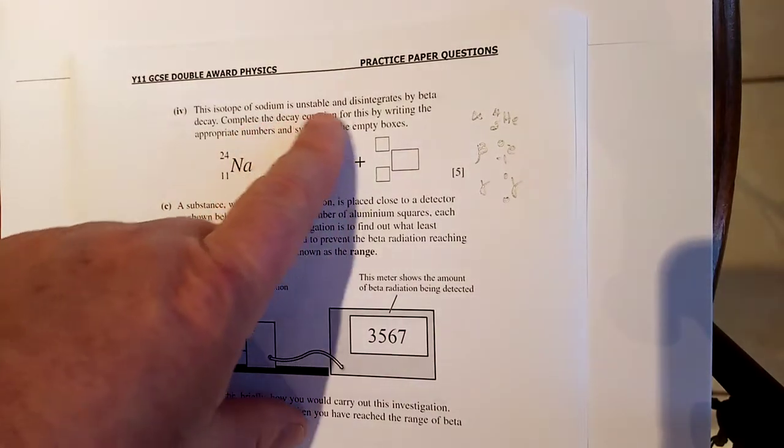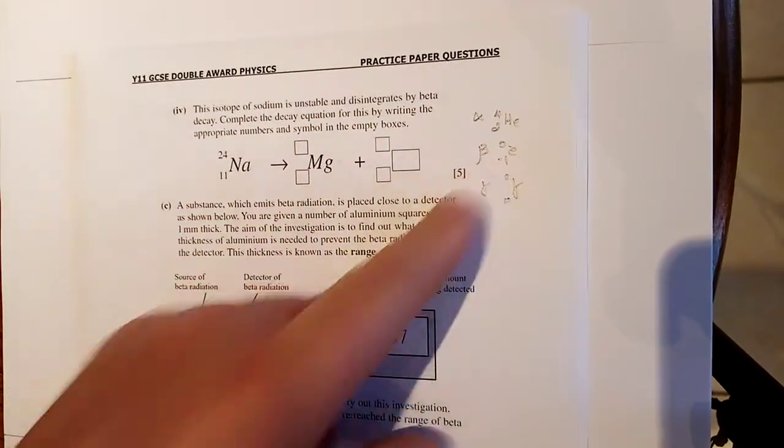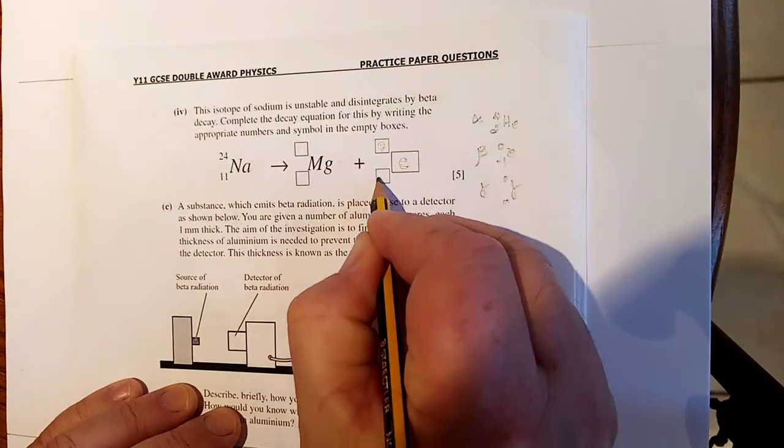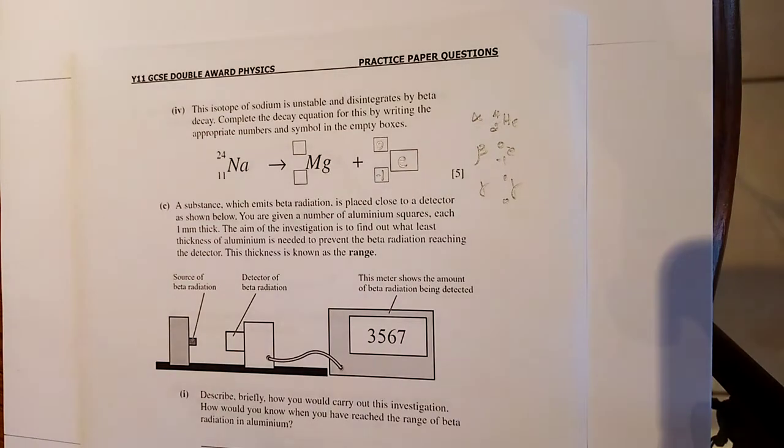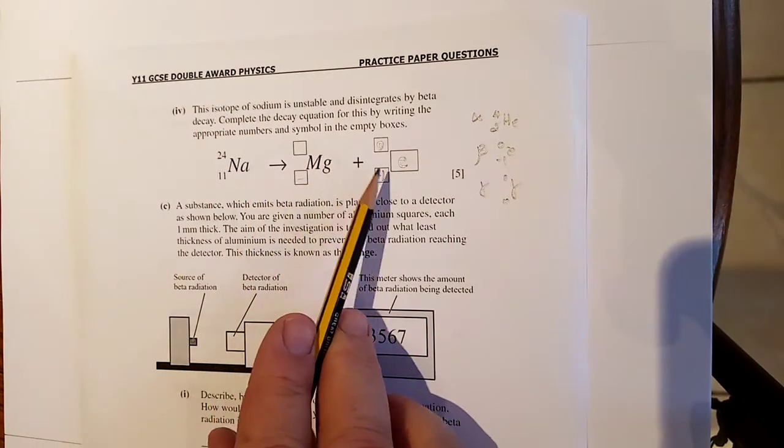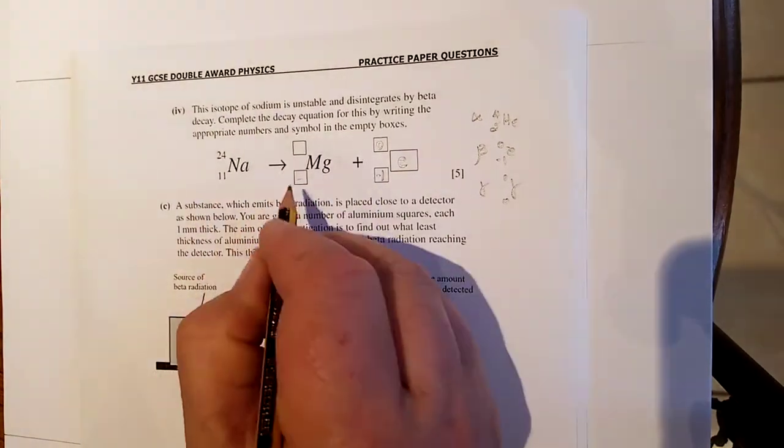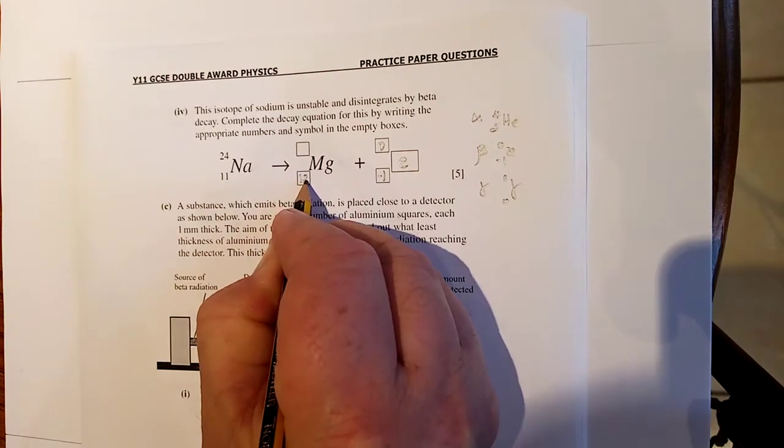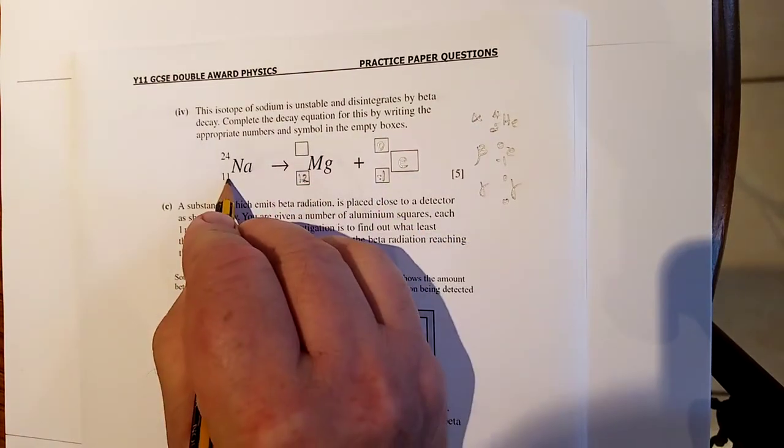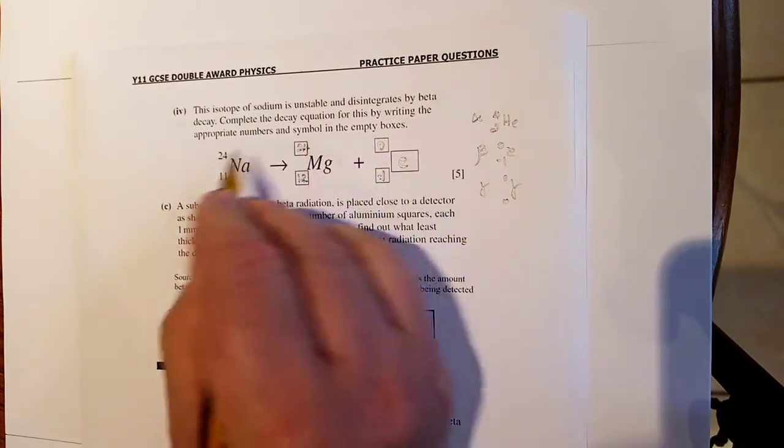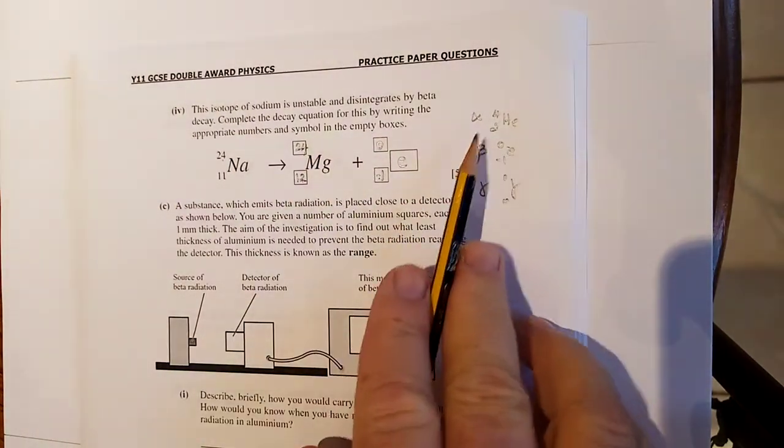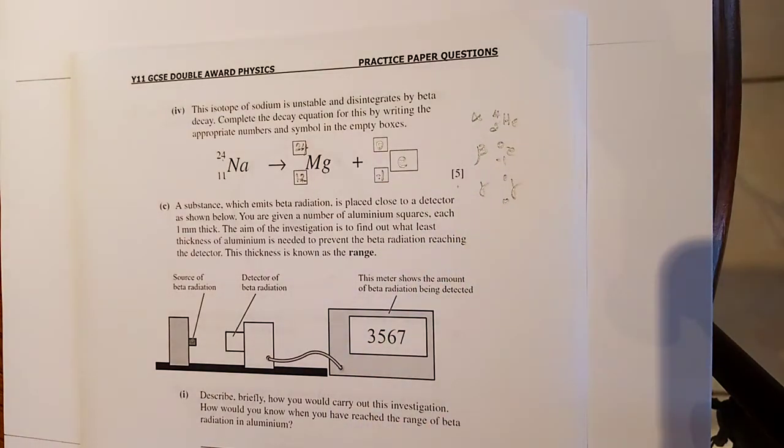So an isotope by beta decay. There's your beta, 0, -1, e. So if you have not learned silly nilly, these numbers here add up to this number. So that must be 12. 12 take away 1 is 11. That's 24. 24, yeah it's 24. Five marks for that. But you see if you don't know these, maybe you won't bother.